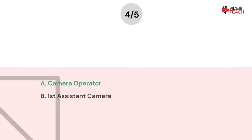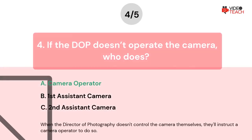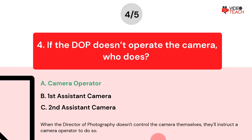The correct answer is A. When the director of photography doesn't control the camera themselves, they'll instruct a camera operator to do so.